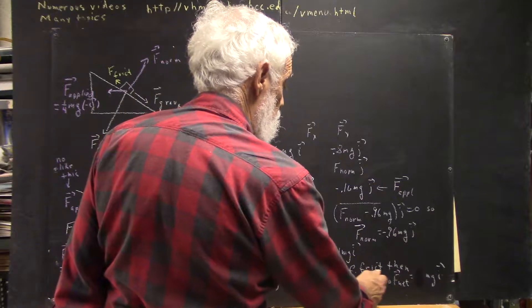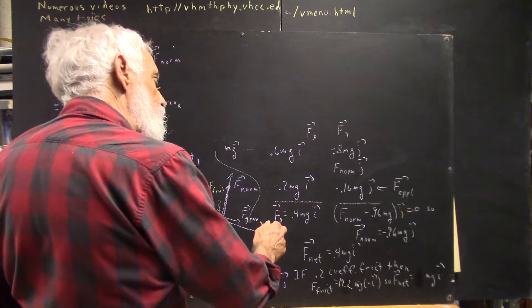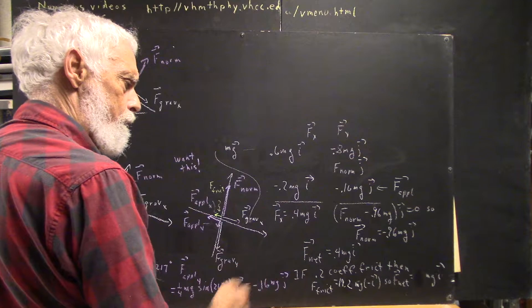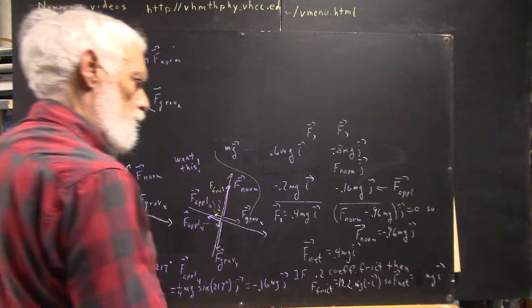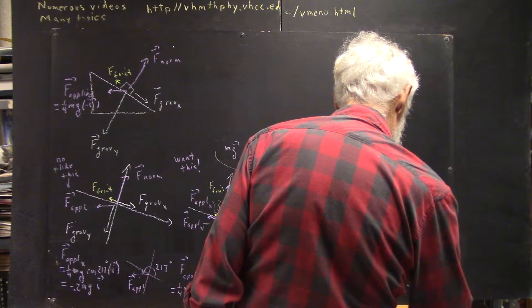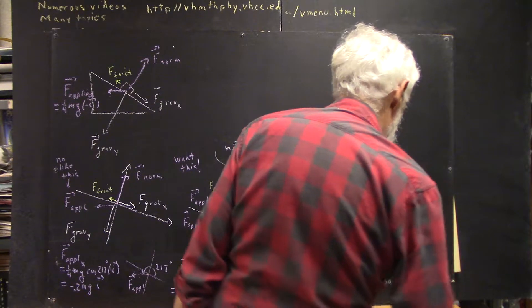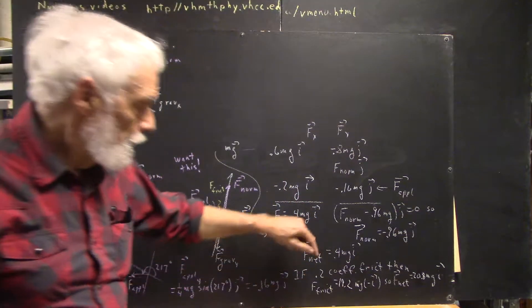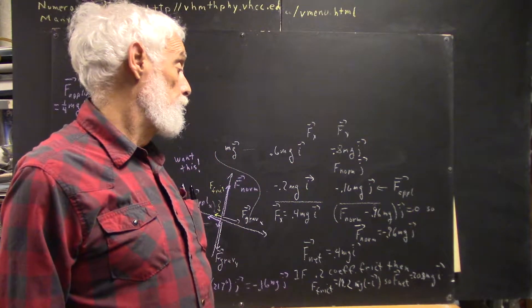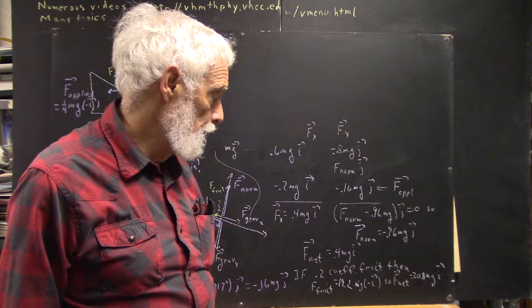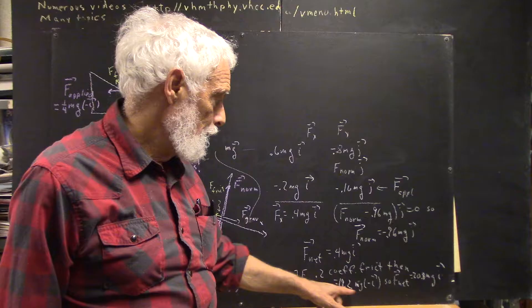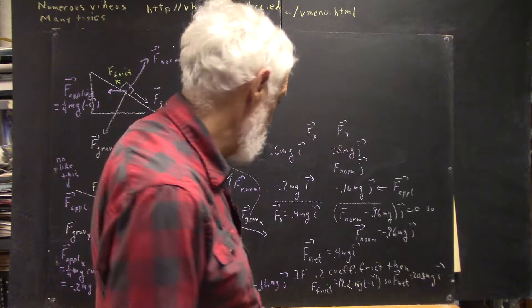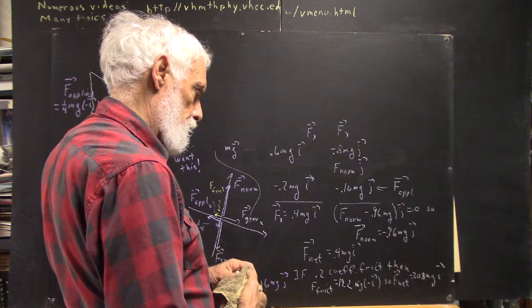So now we have 19.2 mg multiplied by negative i, and that has to be added to our x forces, and that's going to leave us 20.8 mg times i. I don't know how I got what I had before, but I'm pretty sure this is 20.8 mg times i. The idea simply is, if you've got friction, you've got to multiply that by the normal force, and then take that into account over here. If there was a 0.2 coefficient of friction, or 20% of the normal force, then the frictional force would be 20% of that 0.96 mg, 19.2 mg times the negative i, and if you add that to the 0.4 mg times i, you get 20.8,